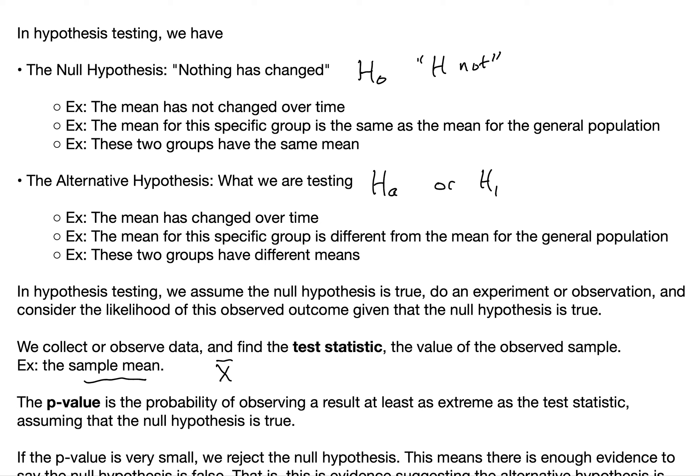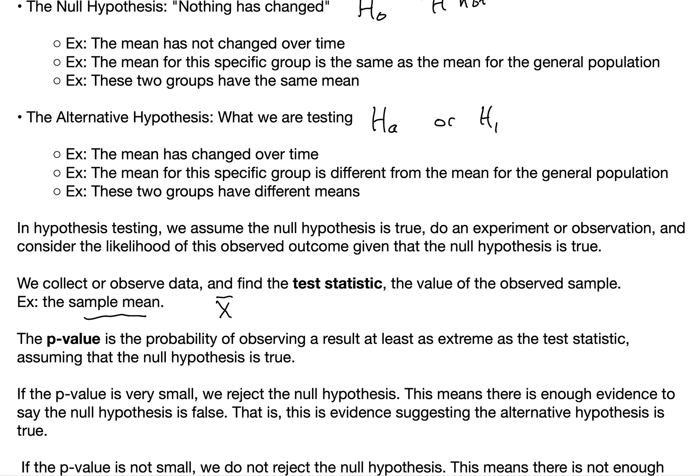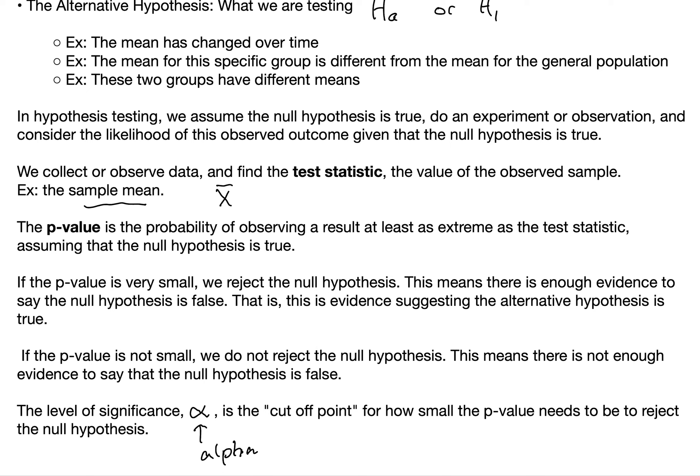Say the null hypothesis is that the average college graduation time is 5 years. If our test statistic — our sample mean — is 5.5 years, how likely is a result of 5.5 years or more, given that the true population mean is 5 years? If the p-value is small, we reject the null hypothesis. This means there's enough evidence to say that the null hypothesis is false — there's evidence suggesting the alternative hypothesis is true, that the true average graduation time is more than 5 years.